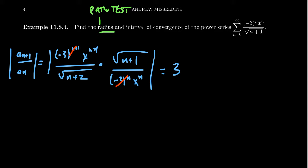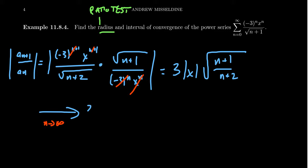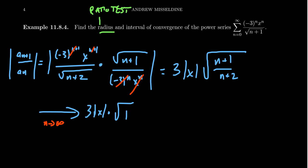Next, looking at the powers of x: x^n on the bottom cancels with most of x^{n+1} on top, leaving one x, giving us an absolute value of x. Then we put together the square roots: we have the square root of (n+1)/(n+2). As n goes to infinity, this square root approaches the square root of 1, which is 1. So the limit becomes 3 times the absolute value of x.